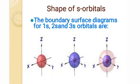All s-orbitals are spherically symmetrical in shape, but they have different sizes. For example, the 1s-orbital and 2s-orbital are both spherically symmetrical but have different sizes.